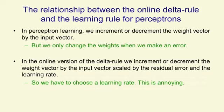In the online version of the delta rule, we increment or decrement the weight vector by the input vector, but we scale that by both the residual error and the learning rate. And one annoying thing about this is we have to choose a learning rate. If we choose a learning rate that's too big, the system will be unstable. And if we choose a learning rate that's too small, it'll take an unnecessarily long time to learn a sensible set of weights.